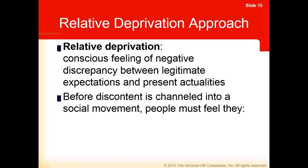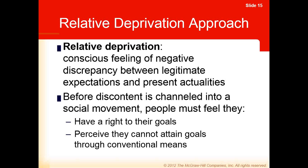Social movements go through four stages: emergence, coalescence, routinization, and finally decline. Before discontent is channeled into a social movement, people have to feel they have a right to the goals and perceive they cannot attain them through conventional means. With the civil rights movement, this goes back to the Reconstruction period with Booker T. Washington's politics of accommodation — believing that working hard would eventually earn equality — versus W.E.B. Du Bois, who perceived that approach would never work. Du Bois founded the Niagara Movement, which eventually became the NAACP, an advocacy organization to provide education to African Americans.